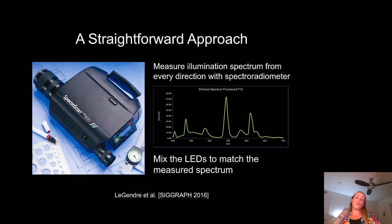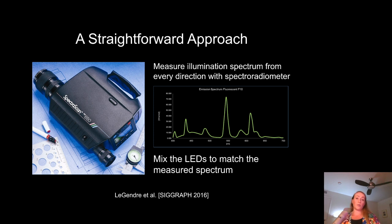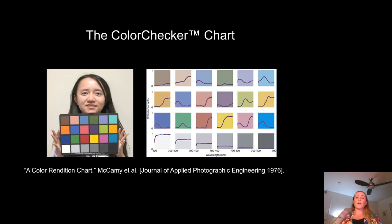In the most straightforward approach, we could point a spectroradiometer — a spectral measurement device — in every direction for which we have a light source inside the light stage, and then mix the LEDs to best match the measured illumination spectrum, borrowing the spectral illuminant matching technique from Wenger et al. 2003. However, this process would be slow and cumbersome. Instead, we thought about how photographers capture color rendition by photographing a color chart, where each chart square has its own unique reflectance spectrum that tells us something different about the spectrum of the scene's lighting.